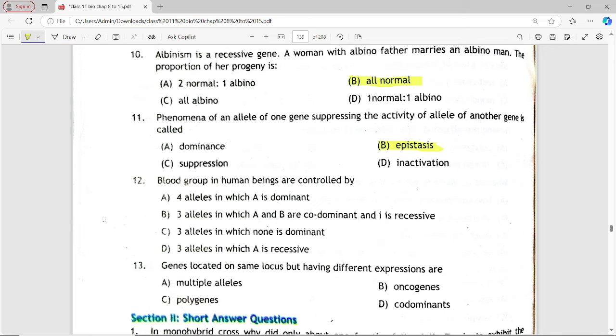Next is: Blood groups in human beings are controlled by? 4 alleles in which A is dominant, 3 alleles in which A and B are co-dominant and I is recessive, 3 alleles in which none is dominant, 3 alleles in which A is recessive. Answer is option B, 3 alleles in which A and B are co-dominant and I is recessive.